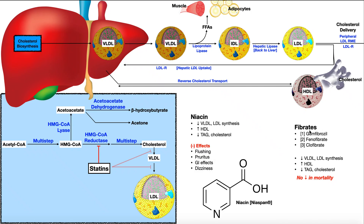The third class of drugs are the fibrates. They also result in lowered VLDL, lowered LDL, lowered triglycerides, lowered cholesterol, and an increase in HDL. But like the statins for primary prevention, these don't show any decrease in mortality for primary or secondary prevention. And so for that reason, the fibrates are really not used anymore — there's not good evidence for their effectiveness.